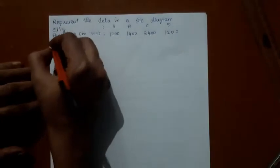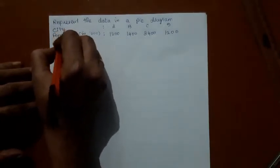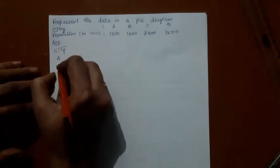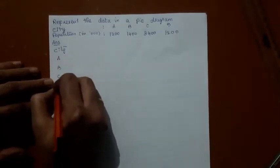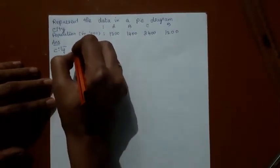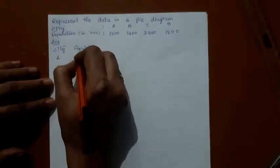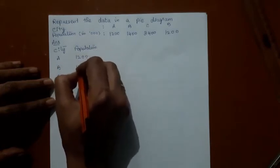Let us consider this problem of constructing a pie diagram, for which first I should frame a table. The citywise distribution of population is given. Population is in thousands; let's not worry about this headnote. You can just write the numbers given.